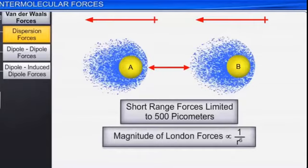The question is: how do Atom A and Atom B attract each other? How is it possible when there is no permanent dipole? The reason is that the electron is a dynamic particle — it is constantly rotating.